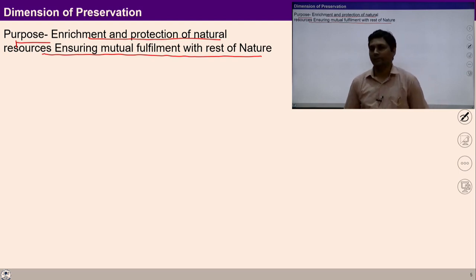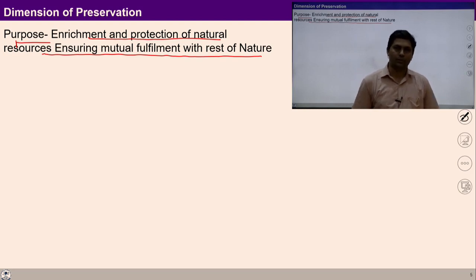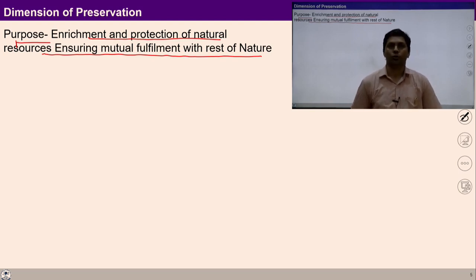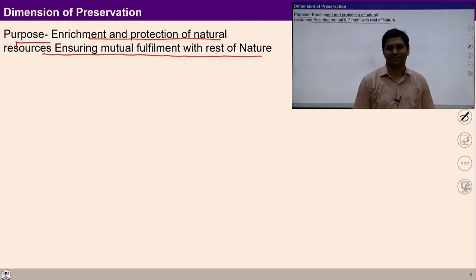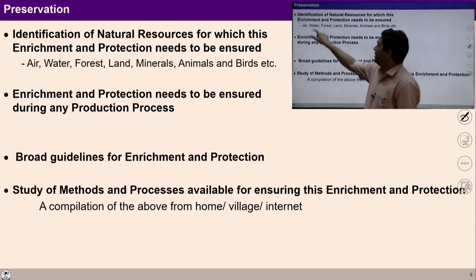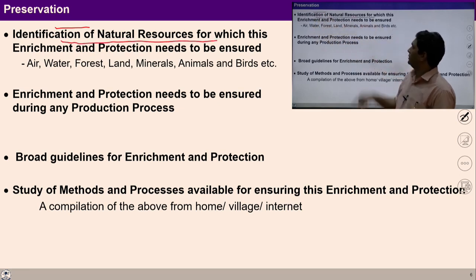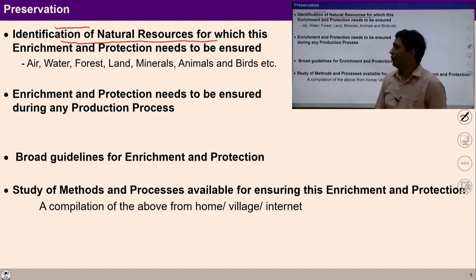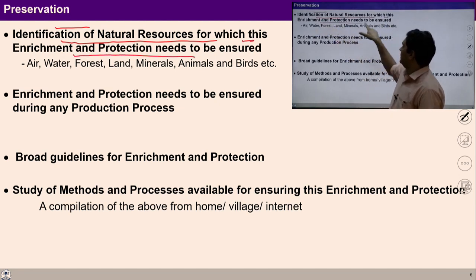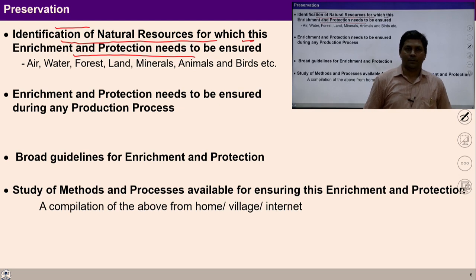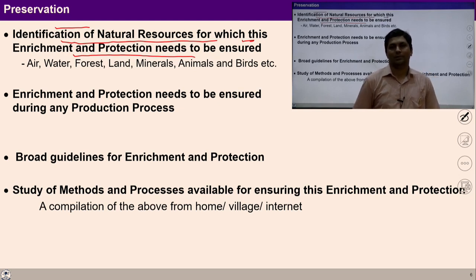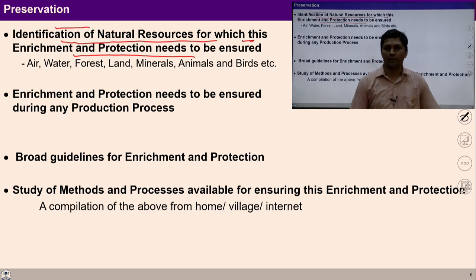Natural resources are required for human beings to run the body and run the system in a smooth manner. So there is a need to enrich and protect available natural resources. For preservation, identification of natural resources for which this enrichment and protection needs to be ensured is required. We have to identify the right natural resources which are required for human life and for smooth running of the system.